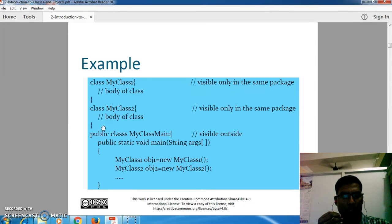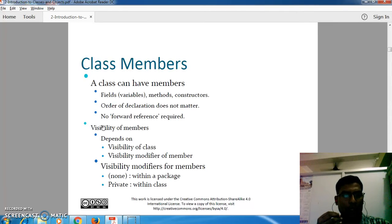Class membership - fields, methods, constructors - all these a class can contain. Order of declaration doesn't matter in Java; no forward referencing is required unlike C and C++. Visibility of members depends on the visibility modifier that we have used.